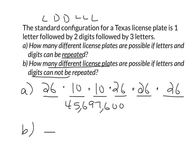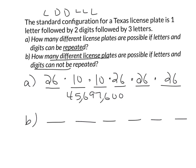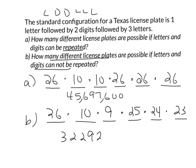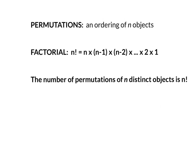Part B: how many different license plates are possible if you cannot repeat? Same configuration - letter, digit, digit, letter, letter, letter - but a few things change. I still have 26 letters and 10 digits for the first two spots, but because I've already used one digit I only have nine left for the second digit. Because I've used one letter already I only have 25 choices, then 24, then 23. Multiplying that out gives 32,292,000 - about 32 million, which is 13 million fewer than when repeating was allowed.